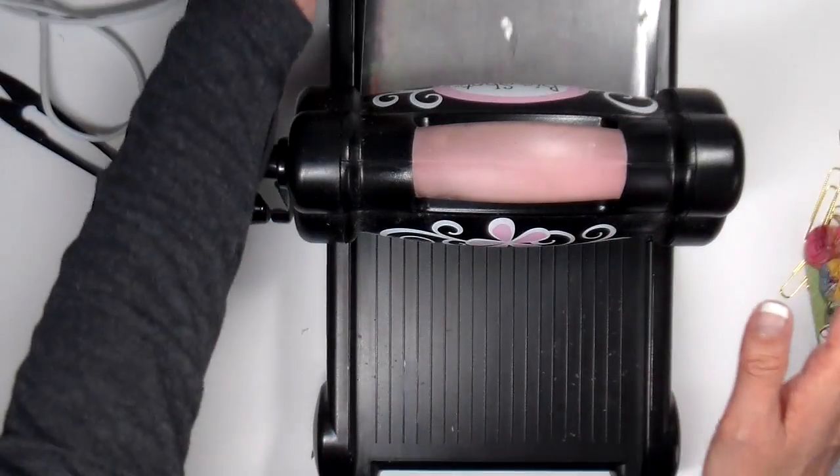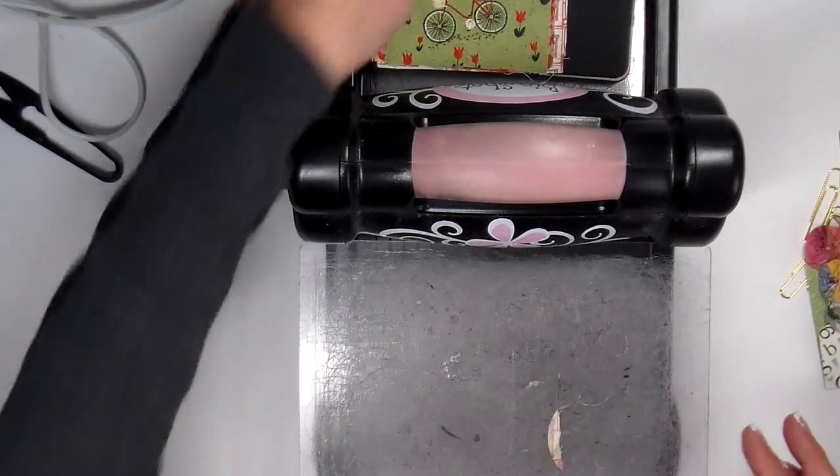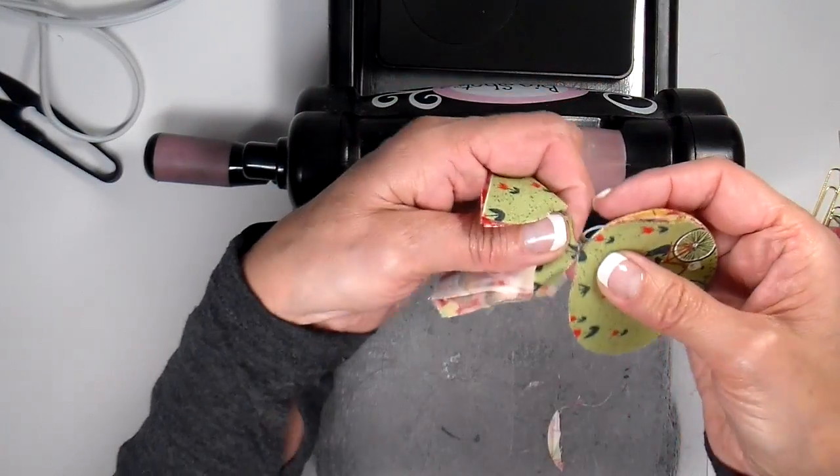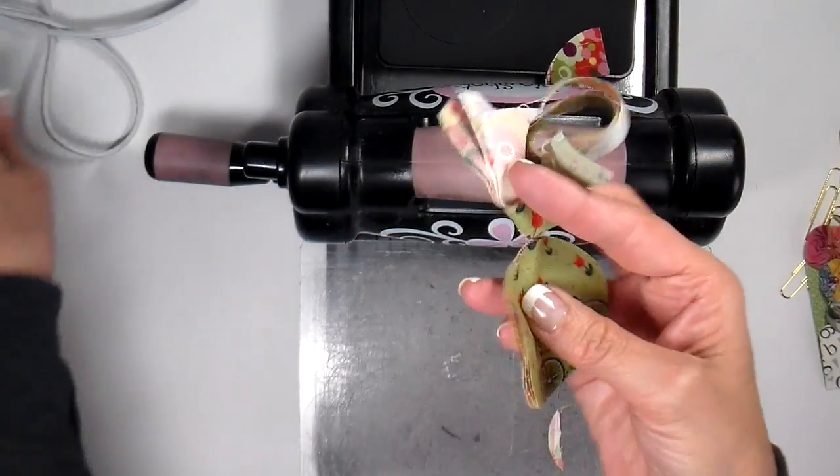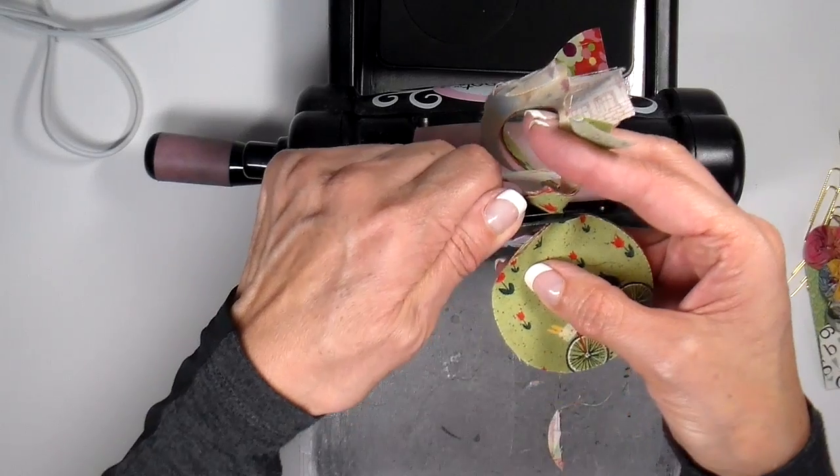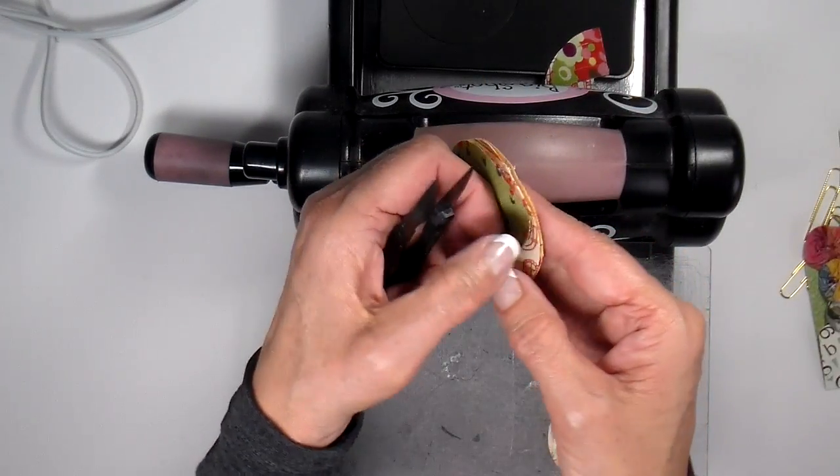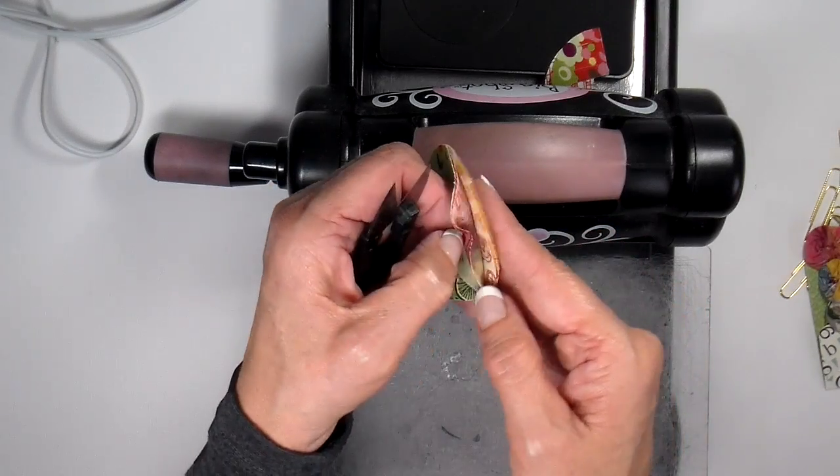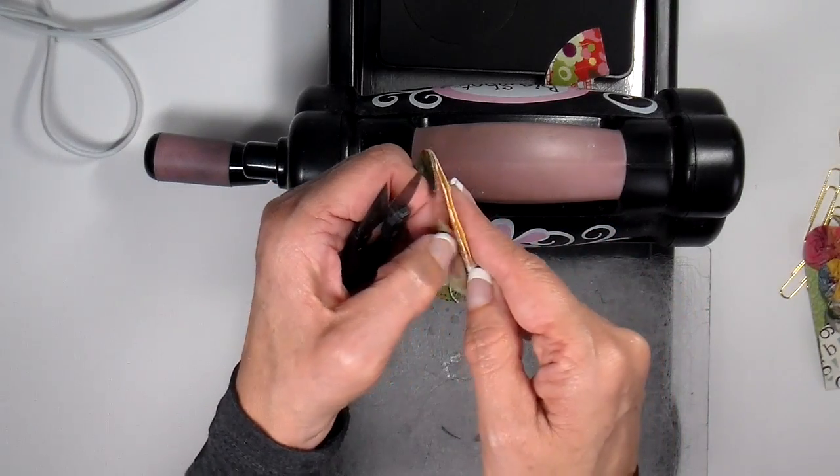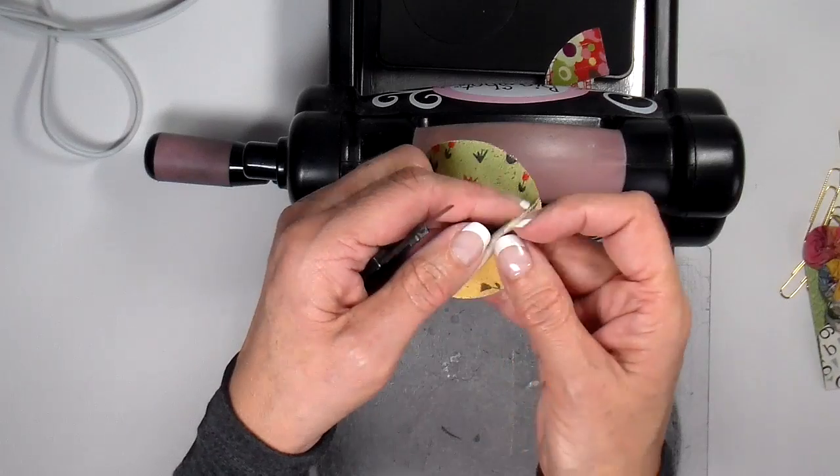One little thing did not cut. I'm just going to take my scissors and there we go. I've got my four perfectly cut little circles, and now it's on to creating little yo-yos.